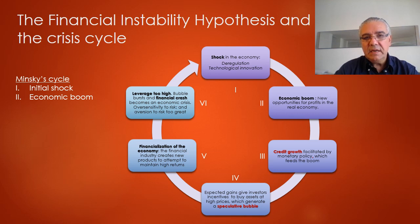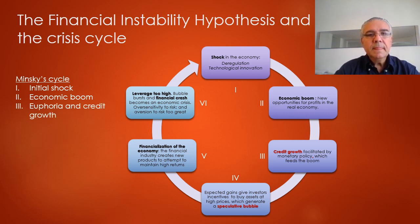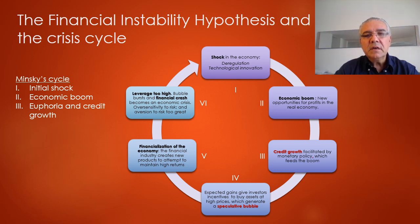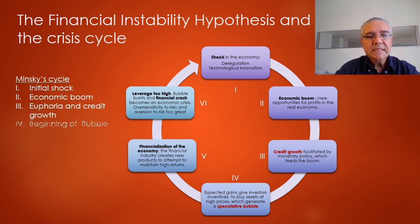In stage three, a euphoric state sets in and banks facilitate investing in the real economy by boosting credit growth, with monetary authorities facilitating that credit growth as well. In stage four, you have the beginning of a bubble, as investors expect high gains and have an incentive to buy assets at high prices, generating speculative bubbles.